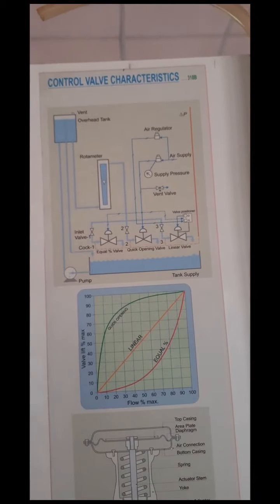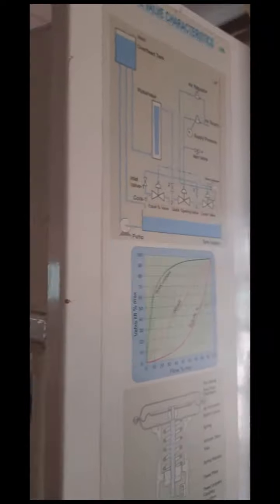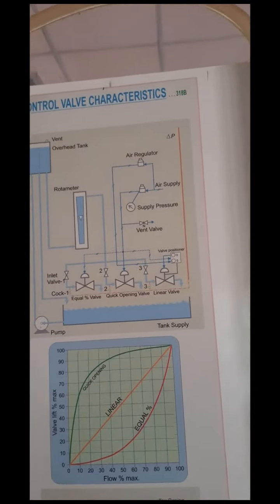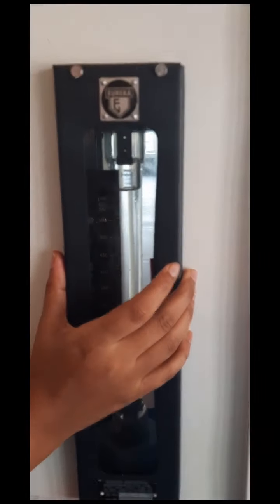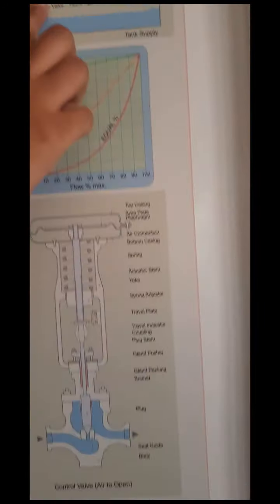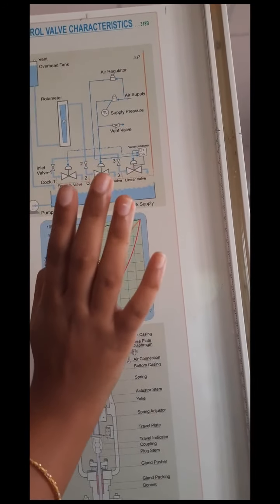Here there is an overhead tank. On the back side of this apparatus, there is a tank over there that is known as the overhead tank. Next, you have a rotameter attached over here. And you have 3 types of valve being attached: equal percentage, quick opening, and linear valve.